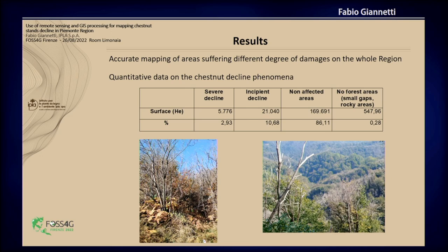The results of this work was an accurate mapping of the areas suffering different degrees of damage. We could provide the regional forest department with quantitative data on the chestnut decline phenomenon. As you can see, 3% of the chestnuts are presently suffering severe decline, and 10% are showing the first signs of suffering of the forest cover. That's all, thank you for your attention.